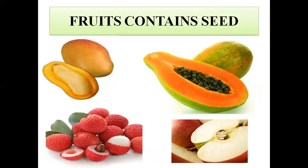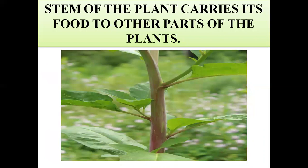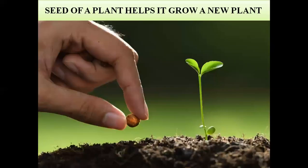The seeds help the plant grow, and through seeds, new plants germinate. The part of the plant where seeds are found is the fruit. The stem of the plant carries nutrients to other parts. The leaves are used to make food for the plant. The seeds of the plant help it grow a new plant.